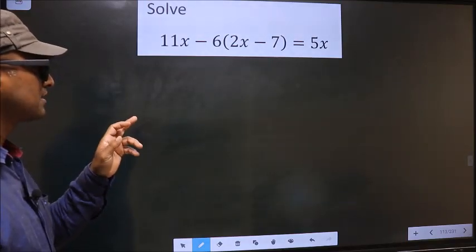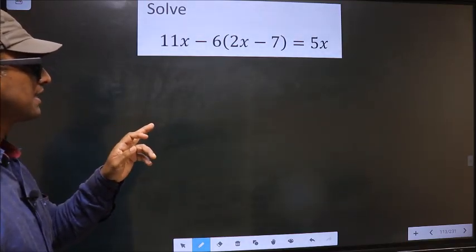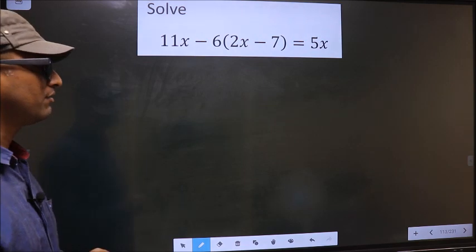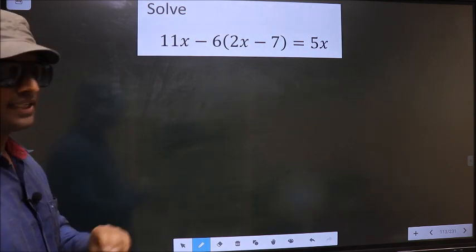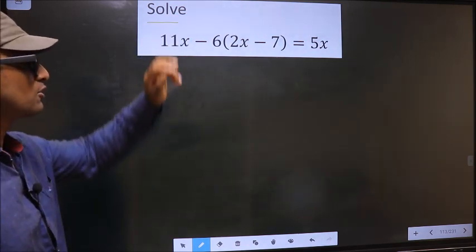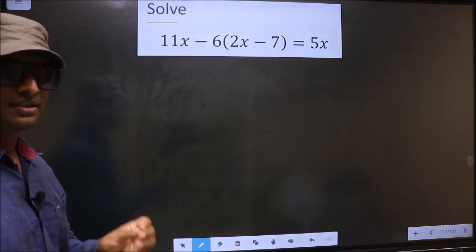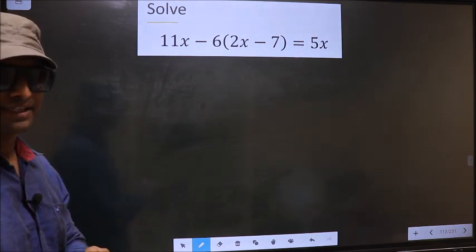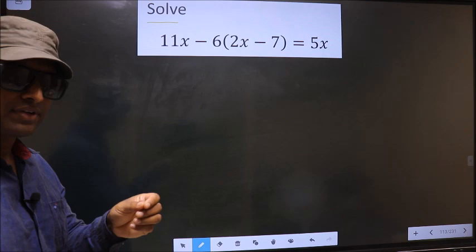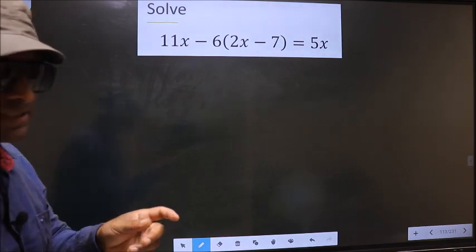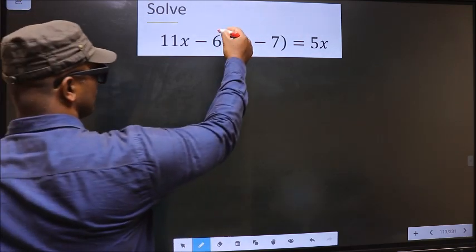Solve 11x minus 6 times 2x minus 7 in brackets equal to 5x. Here they told us to solve, which means we should find the value of x. For that, first we should open up the brackets in this way.